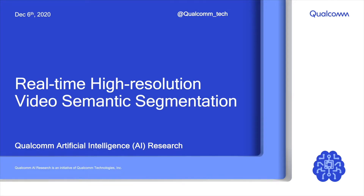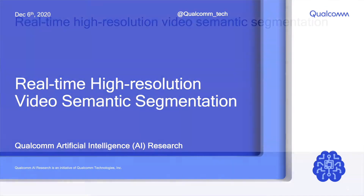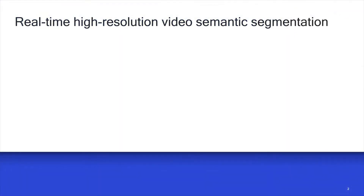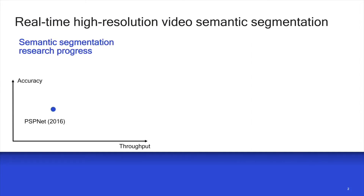Welcome to the high-resolution video semantic segmentation demo with model efficiency enhancement by Qualcomm AI Research. Semantic segmentation assigns every pixel to a specific label and has been intensively studied in the last decade. Modern deep learning research pushes the segmentation performance to new heights approximately every 6 to 12 months.